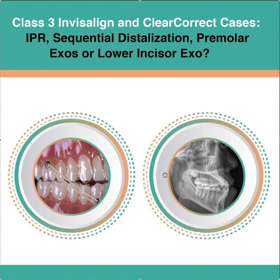Things I'm going to look at on a Class 3 case: I'm going to look at the inclination of the incisors relative to the denture bases, the inclination of the upper incisors relative to the maxilla, the inclination of the lower incisors relative to the mandible, as well as the inclination of the incisors relative to the cranial base, so that I know what the options are — because not all options are ideal depending on what you see in a cephalometric x-ray.